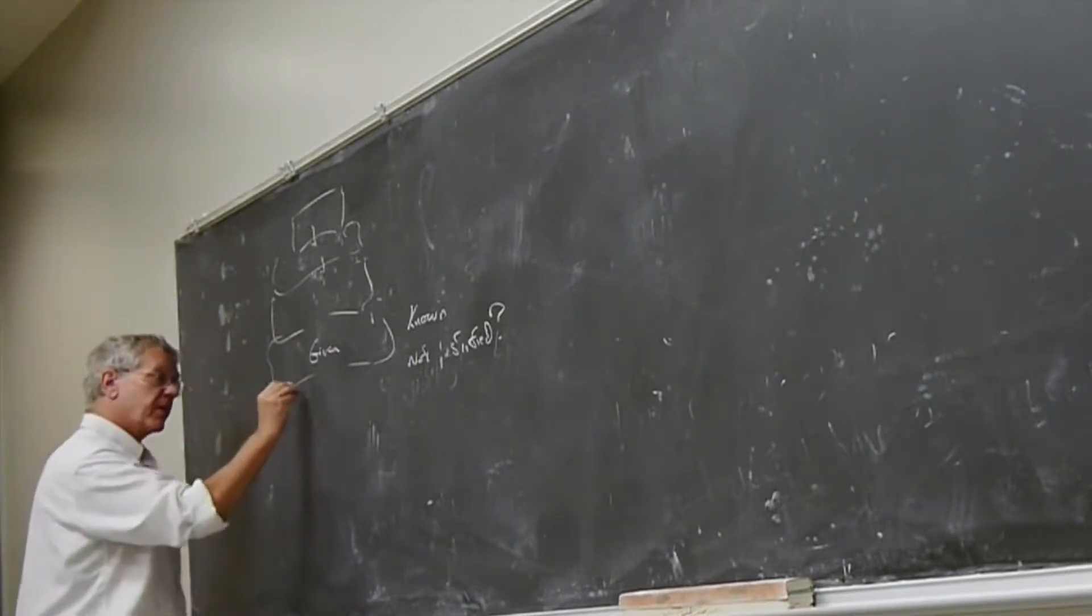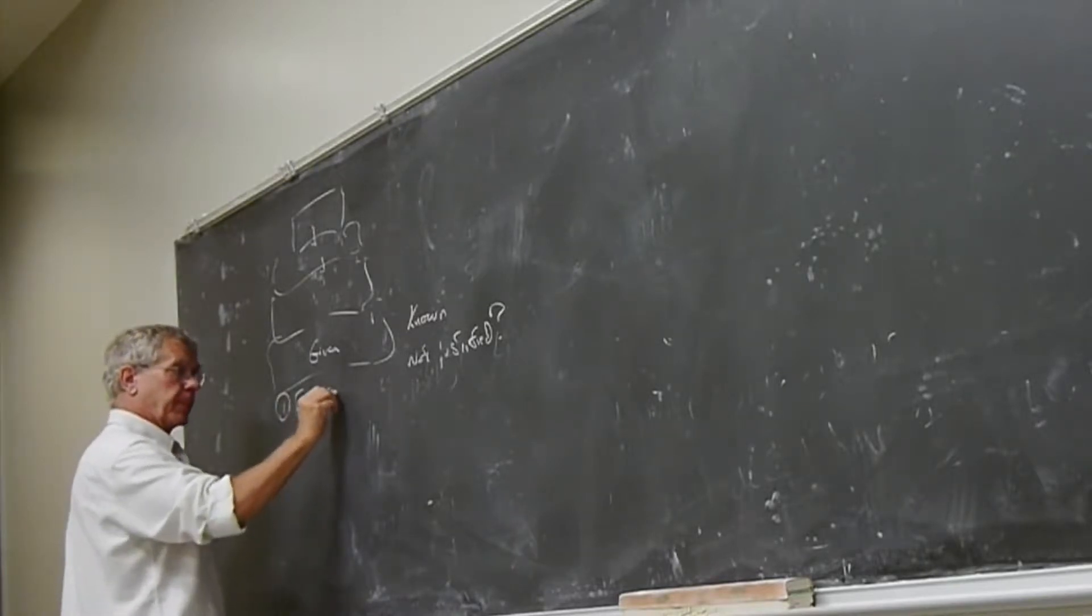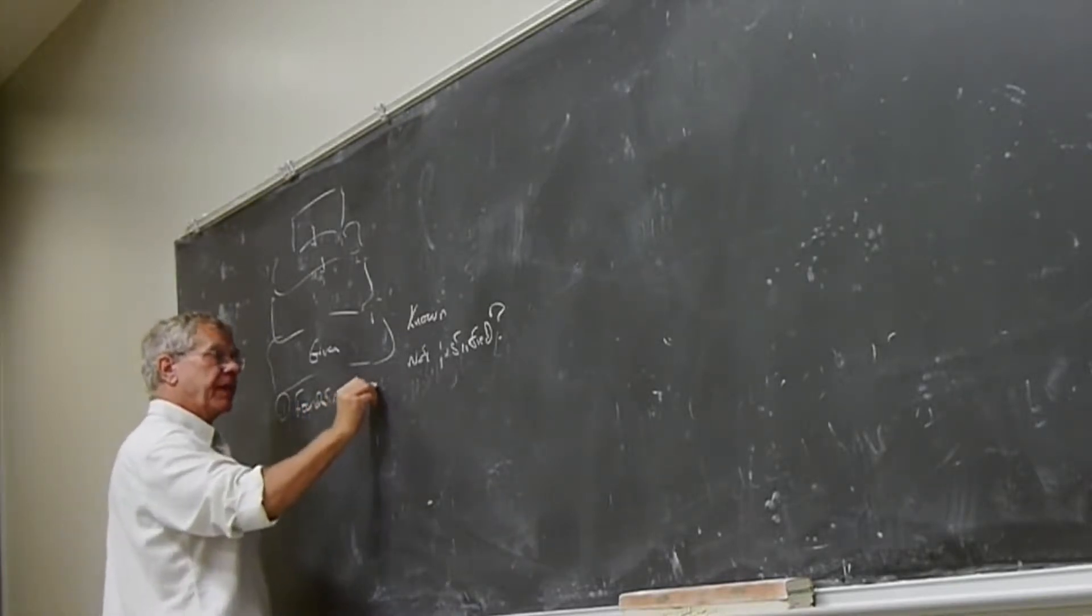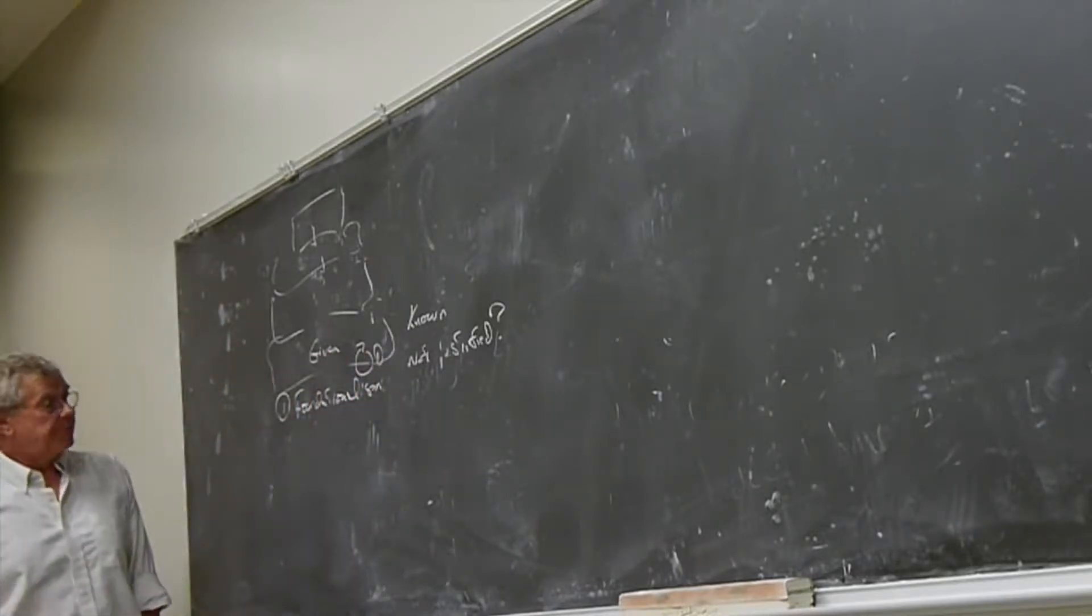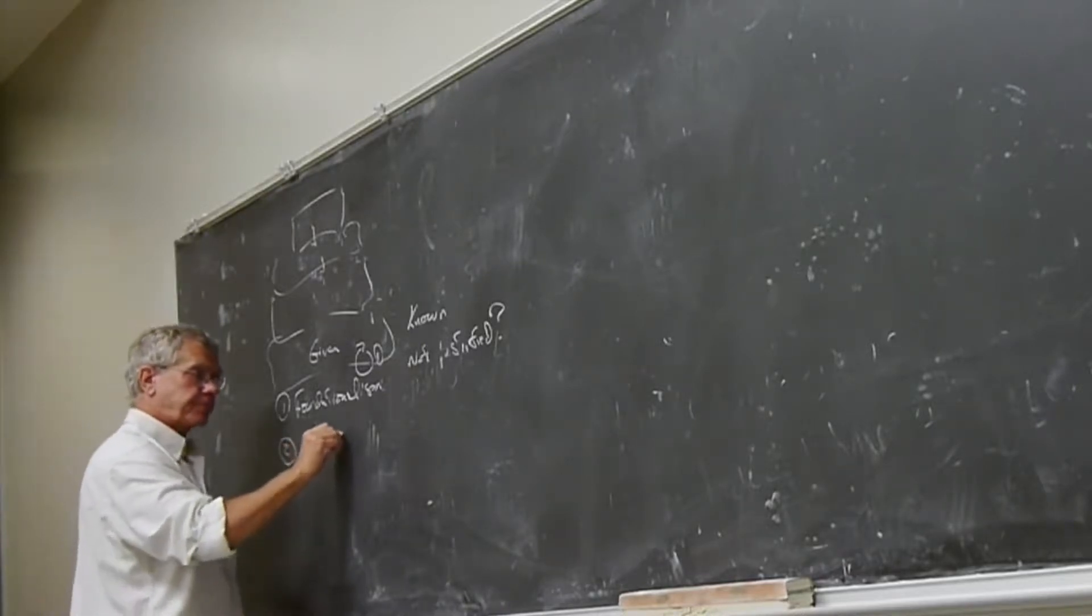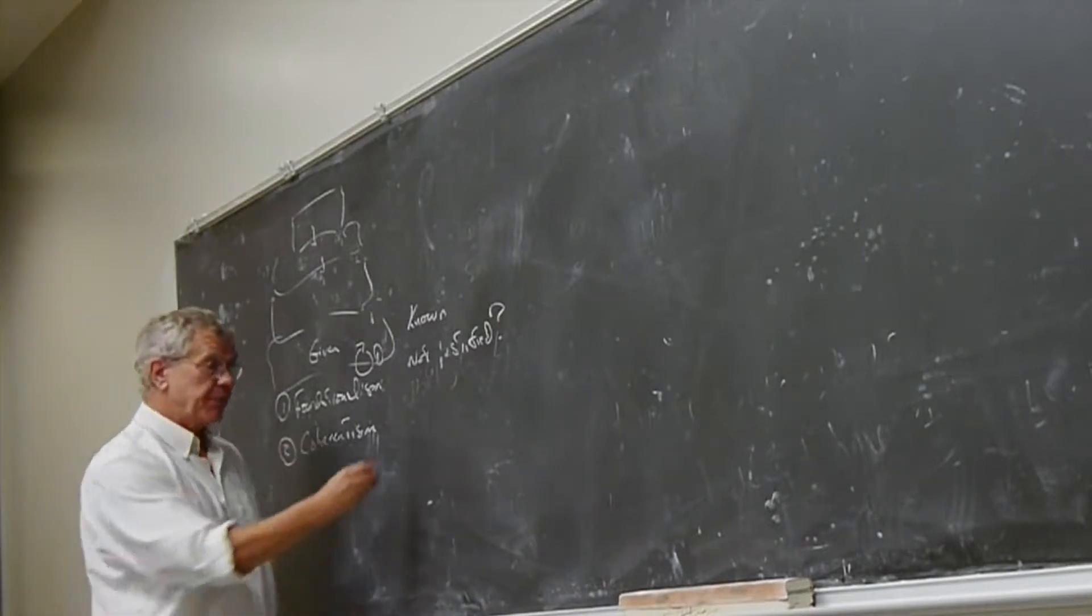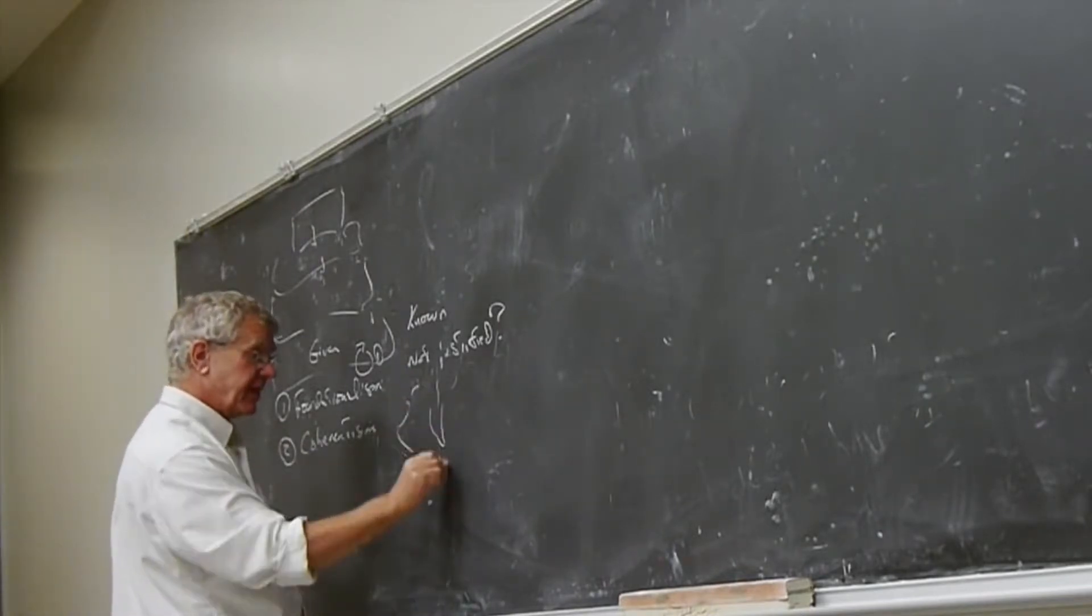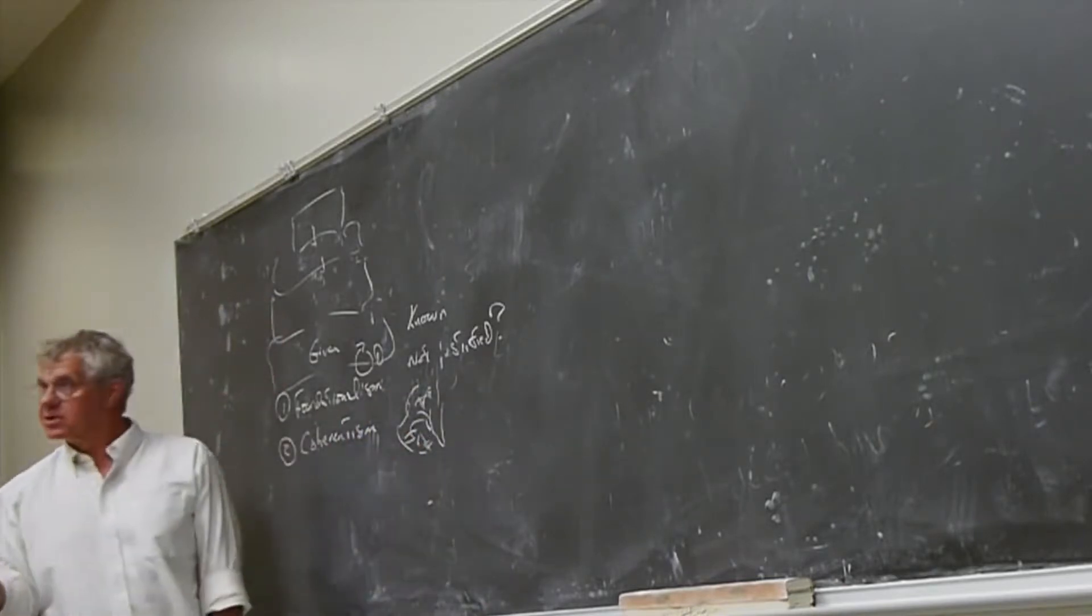And so, what do we say about that? That looks like that refutes the claim that knowledge is justified true belief, that knowledge requires justification. And so, our three options are, first of all, foundationalism. And that's the view that basically the given justifies itself. So, that's option one. Option two is known as coherentism.